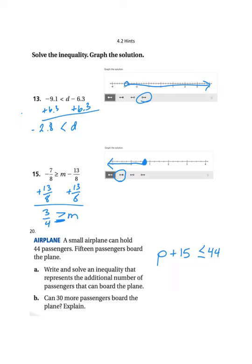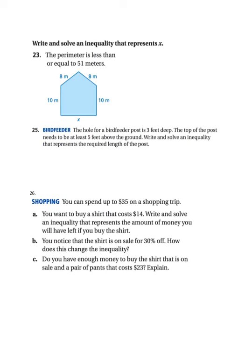I can have less than 44 on the plane. I just can't have more than 44 on the plane. So that is our inequality. I'm going to leave it to you to solve that inequality by subtracting 15 from both sides. And then you're going to check to see, can 30 more passengers board the plane? Well, you're going to substitute 30 in place of P and see if it works.